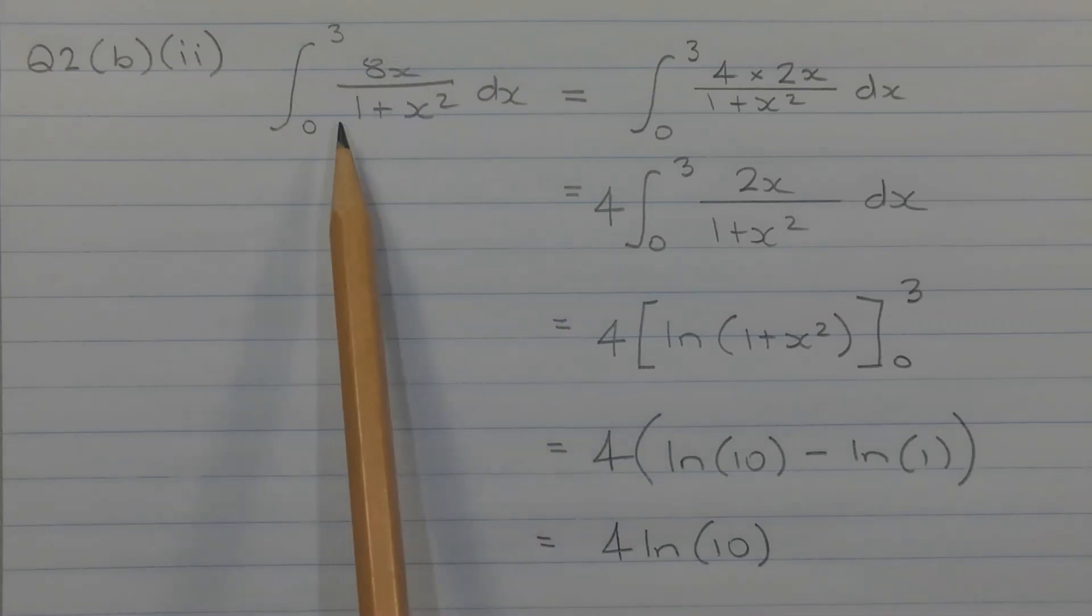So 8x over 1 plus x squared can be written as 4 times 2x over 1 plus x squared because I want 2x to appear in the numerator. Now this 4 here is a multiplying constant and that can be written outside or in front of the integral. So that equals to 4 times the integral from x equals 0 to x equals 3 of 2x over 1 plus x squared dx.